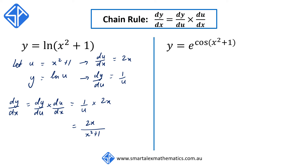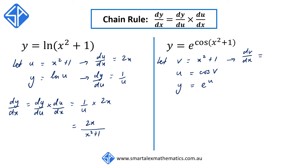Our last example, we've got y is equal to e to the power of cos(x squared plus 1). This one involves two iterations of the chain rule. We start by letting v equal to x squared plus 1, then write cos(x squared plus 1) as u equal to cos v, and y can then be written as e to the power of u. We begin by differentiating v with respect to x: dv/dx is equal to 2x, then du/dv is equal to negative sine v, and dy/du is equal to e to the u.